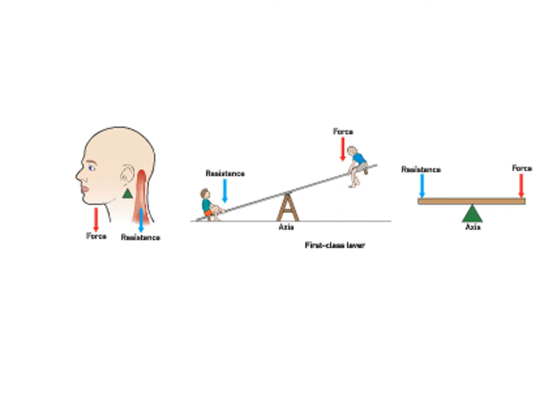The only anatomical example of a first class lever found in textbooks is the neck: the posterior neck muscles work to keep your chin up off your chest, placing the axis in the middle between resistance and force. A seesaw is the classic non-anatomical example — the axis is right in the middle of the two people bouncing up and down. As long as the axis is in the middle, you have a first class lever.